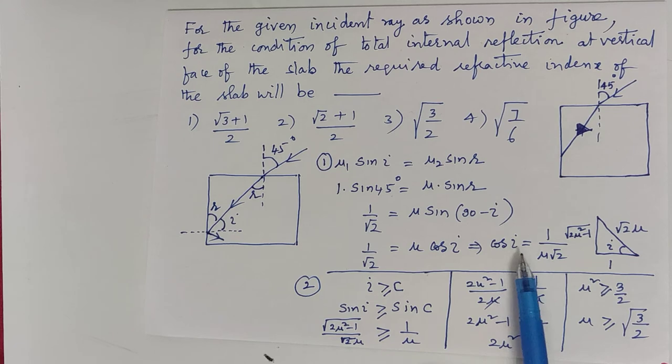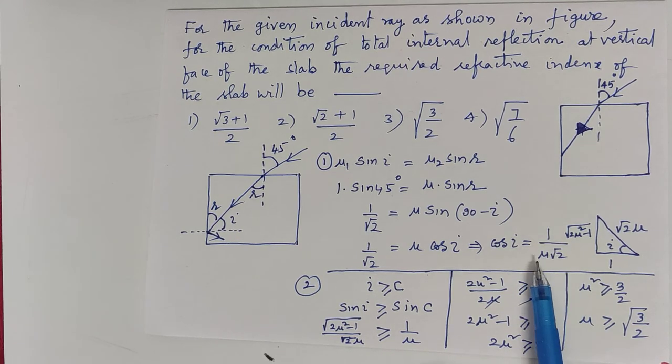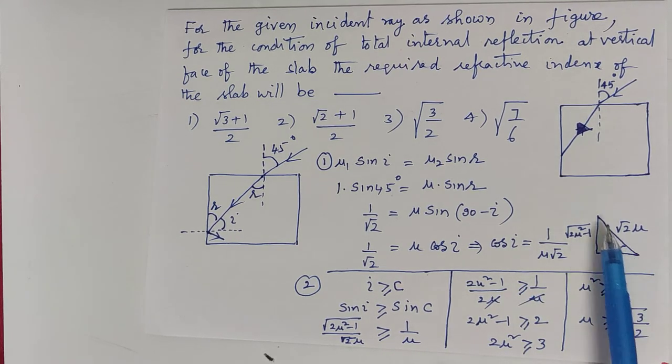Let us take a right angle triangle. Adjacent side 1, hypotenuse √2μ. By using Pythagorean theorem, here we get opposite side √(2μ² - 1).